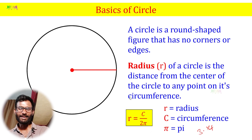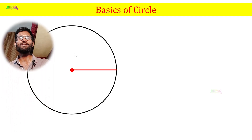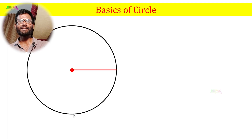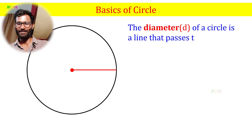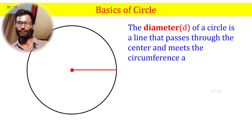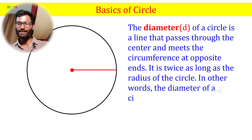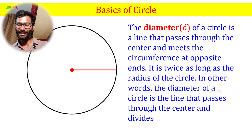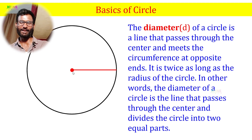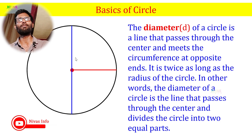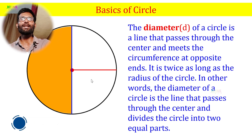The diameter of a circle is a line that passes through the center and meets the circumference at opposite ends. It is twice as long as the radius of the circle. In other words, the diameter is the line that passes through the center and divides the circle into two equal parts. If you look at the center point and draw a line touching the circle on both sides, that is the diameter.